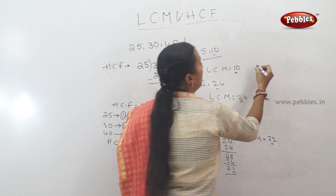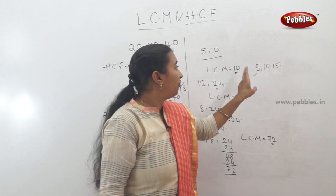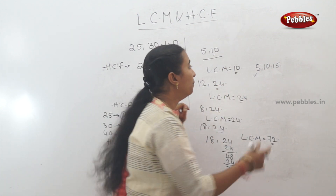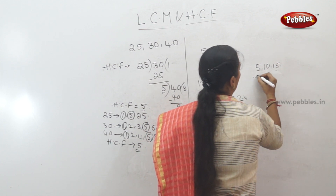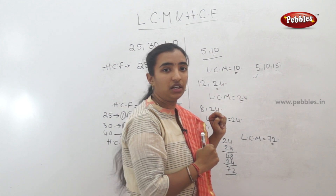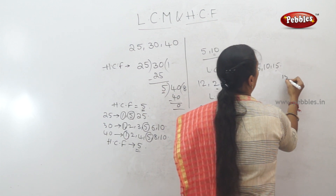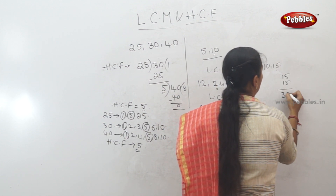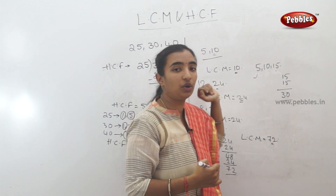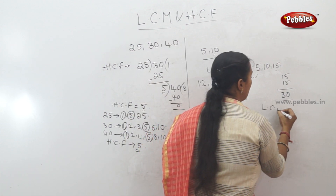Now suppose we have three numbers: 5, 10, and 15. Using this method, 15 is not divisible into 10. So 1 times 10 is 10, 2 times 10 is 20, which is not equal to 15. So we try 15 doubled: 15 plus 15 is 30. Now 30 is divisible by 10 and also by 15 and 5. So the LCM of 5, 10, and 15 is 30.